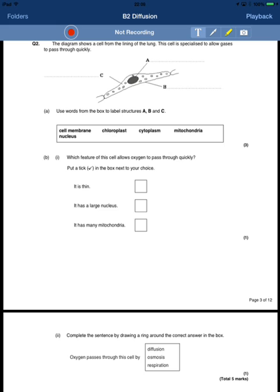They've even given you the options there of which ones to choose. Now part B, very straightforward: which feature of the cell allows oxygen to pass through it quickly?